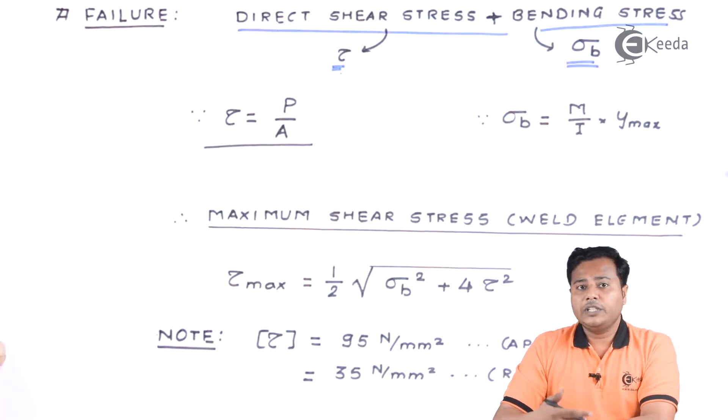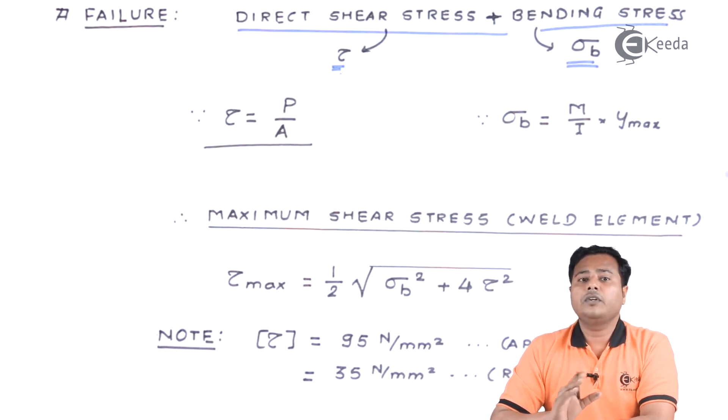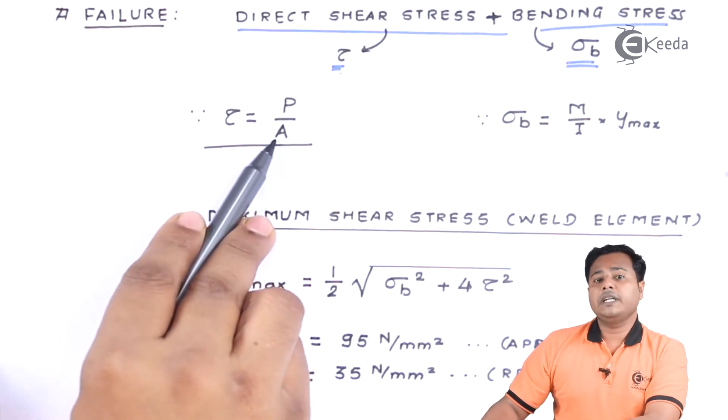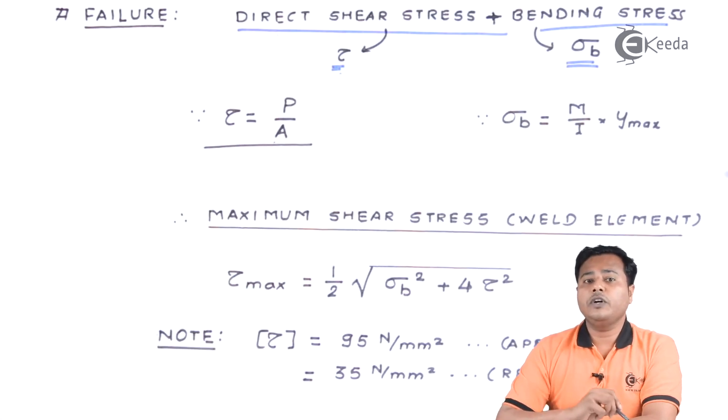Now in this case we are concentrating on only the weld. We are not concentrating on the material or the beam on which the force is acting. And that's why this area will be basically the area of cross section of your weld.